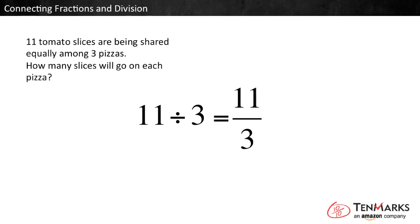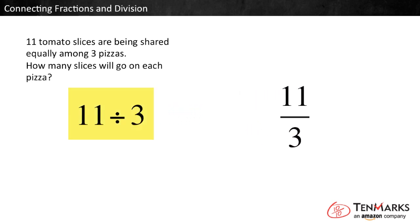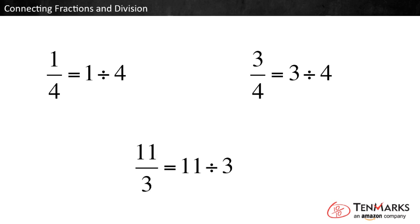Notice the numbers in the equation. 11 is both the dividend and the quotient's numerator. 3 is both the divisor and the quotient's denominator. The fraction bar takes the place of the division sign and means divide. So writing 11 divided by 3 is the same as writing 11 thirds. In this video you have seen how fractions and division are related. All fractions are division problems where the numerator is divided by the denominator.